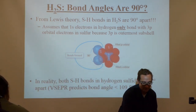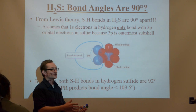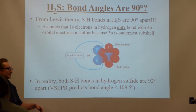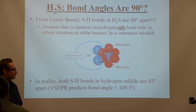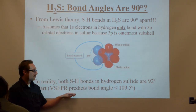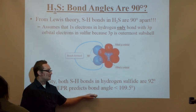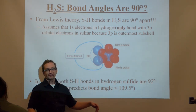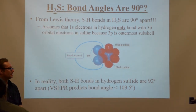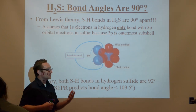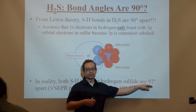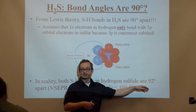However, experiments have shown that the bond angle is not 90 degrees — it's actually a little bit off from 90; it's 92 degrees. VSEPR predicts that these bond angles would be something less than 109.5, but that's just a qualitative way of looking at it. So what bonding model can we use to explain the fact that it's not 90 degrees but 92 degrees?